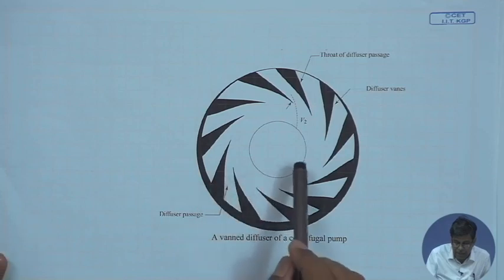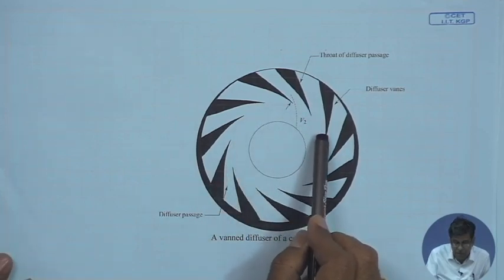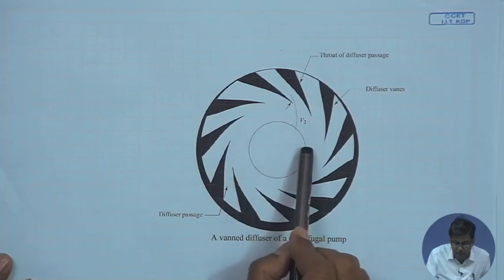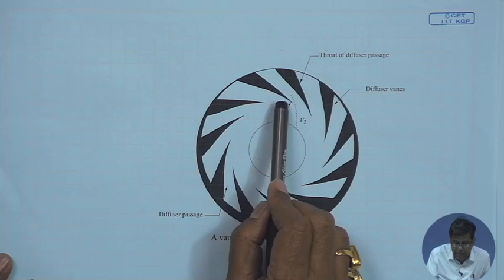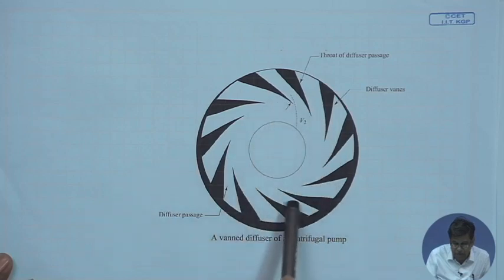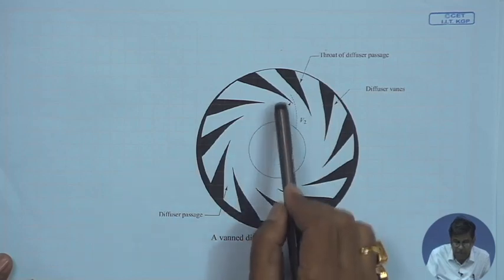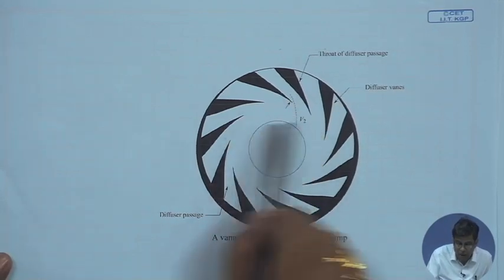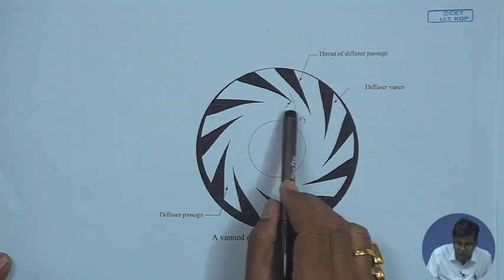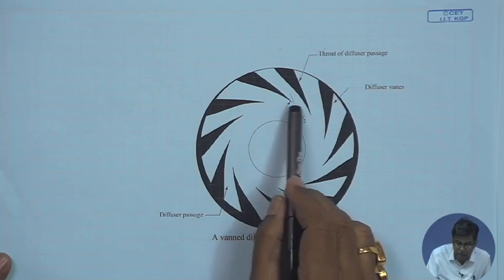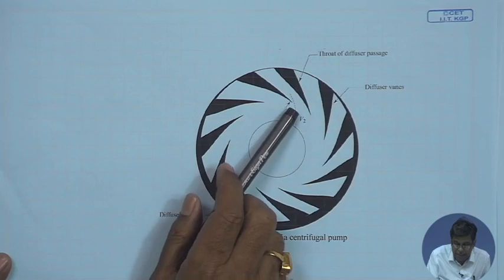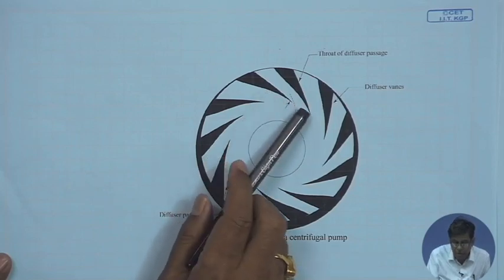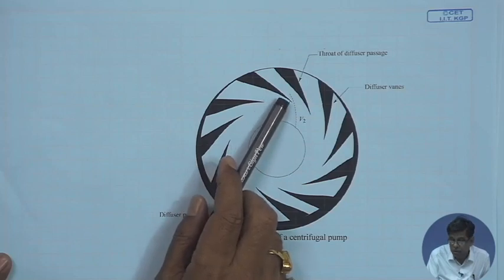One interesting point is that there is always a vaneless space between the impeller outer periphery and the entry to the ring of diffuser blades. This vaneless space is provided to accommodate the spiral vortex flow, directing the flow such that there is a shockless, proper entry to the diffuser vane without much loss. That is why a vaneless space is given.